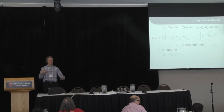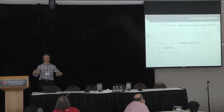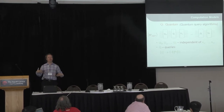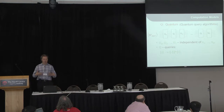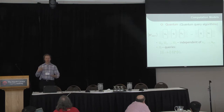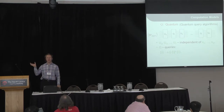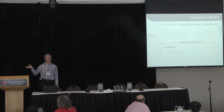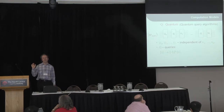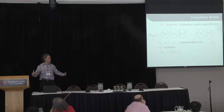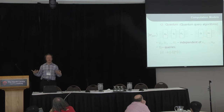Quantumly, we have quantum interference — different paths of computation might interfere, so we can no longer describe a query algorithm by a tree. What we have is a quantum state, on which we perform queries. A query flips the phase of a quantum state depending on the value of a variable. We can interleave these queries with arbitrary transformations that are independent of the input, which are free of charge. The only thing we are charged for are queries.